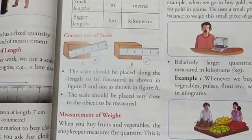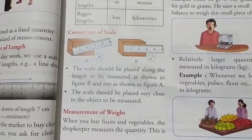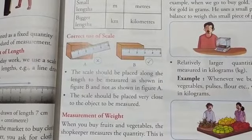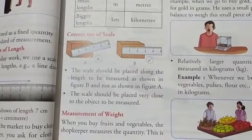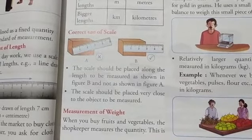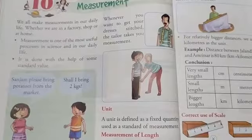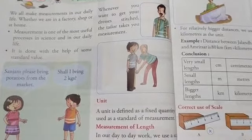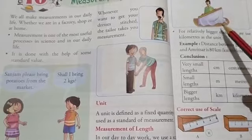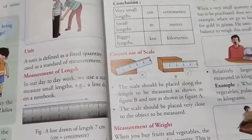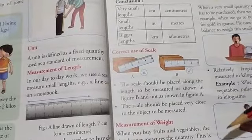Similarly, whenever we go to market to buy fruits or vegetables, before giving the vegetables or the fruits, the shopkeeper measures the quantity of the fruits and the vegetables. So in all these cases we can notice that some kind of measurement is being done. For example, the cloth merchant measures the length of the cloth and the vegetable or fruit seller measures the weight of the fruits or vegetables.